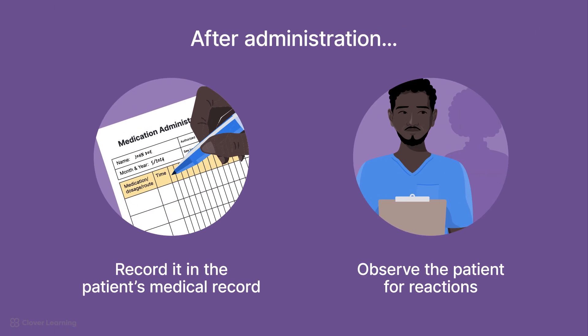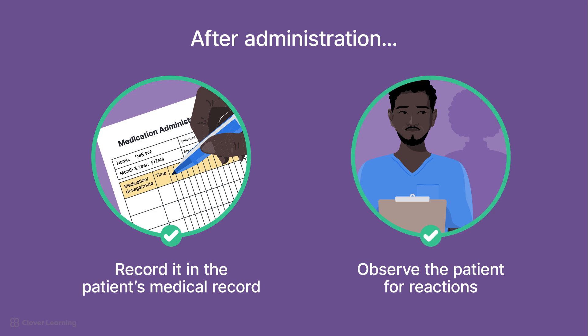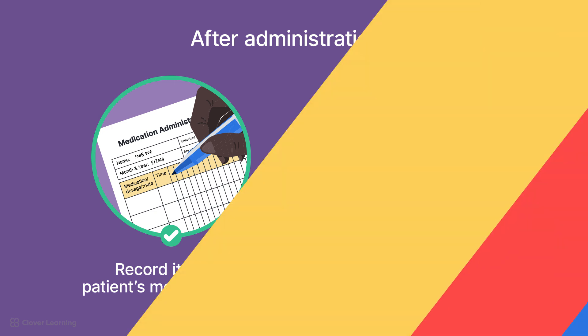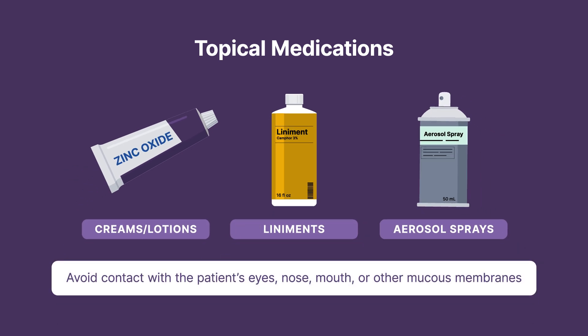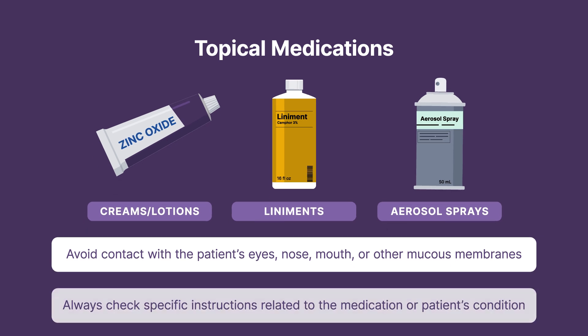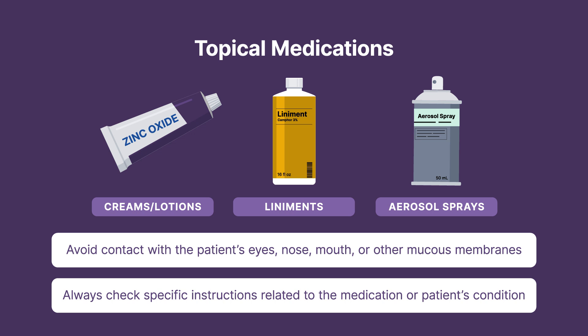After completing any medication administration, regardless of route, be sure to record it in the patient's medical record, including the time and any observations. Observe the patient for any immediate adverse reactions or side effects, and ensure that the medication is achieving its intended effect. In summary, there are several types of medications used in the treatment of skin disorders. Topical medications come in cream, lotion, liniment, and aerosol spray forms. It's crucial to avoid contact with the patient's eyes, nose, mouth, or other mucous membranes when administering these medications. Always check for specific instructions related to the medication or the patient's condition. Proper technique ensures the medication's efficacy and reduces the risk of side effects or injury.